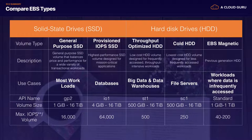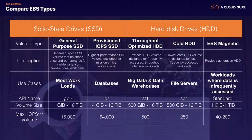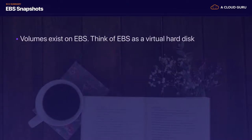The different EBS types: General Purpose SSD (gp2) and Provisioned IOPS SSD (io1) are our two SSD flavors. If you want your IOPS to go above 16,000, move from general purpose to provisioned IOPS. For hard disk drives we have three types: Throughput Optimized HDD (st1), Cold HDD (sc1), and EBS Magnetic, sometimes referred to as Standard. If you need to optimize throughput, choose Throughput Optimized; for the lowest cost storage, use Cold HDD.